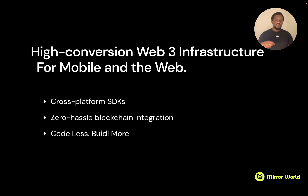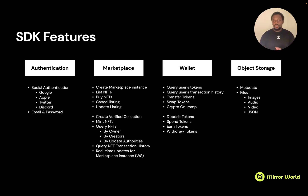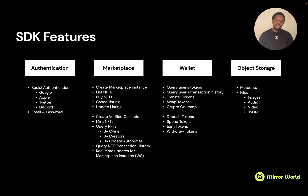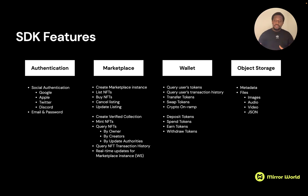We remove the inconveniences that prevent users from converting and actually using your application. The SDK includes an authentication API so you can authenticate users via social authentication — which is a great option for mobile apps and games — as well as email and password. Each account created in your Mirror World application is assigned a key pair with a public and private key, giving them a wallet address. We encrypt the secret key on our wallet solution, which you can read about in our documentation.